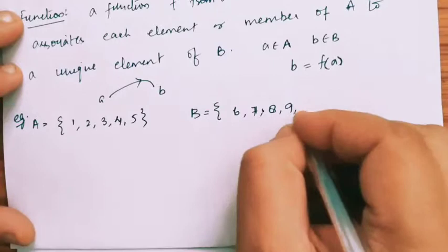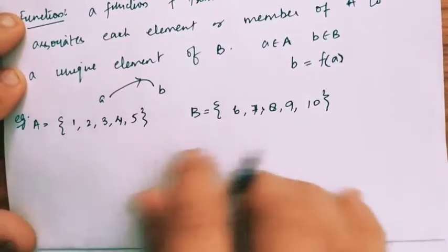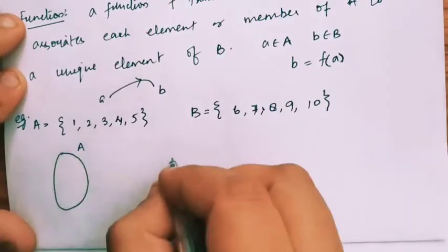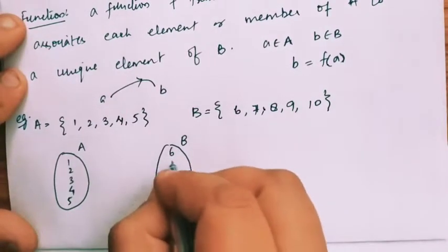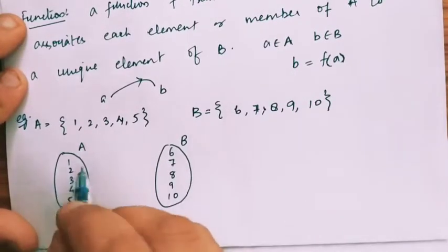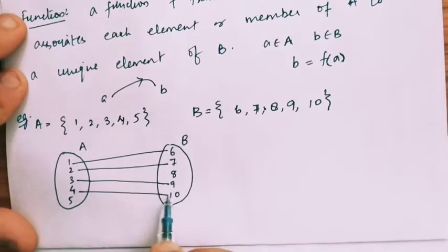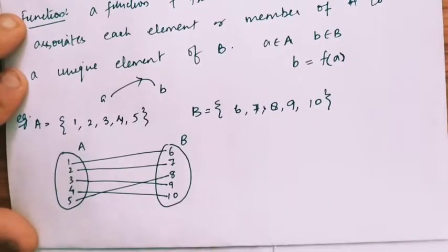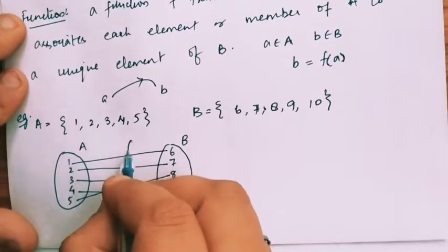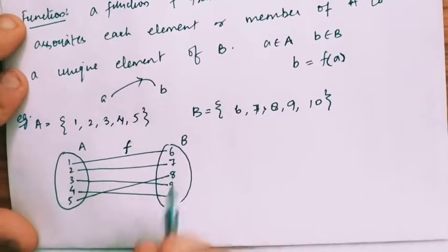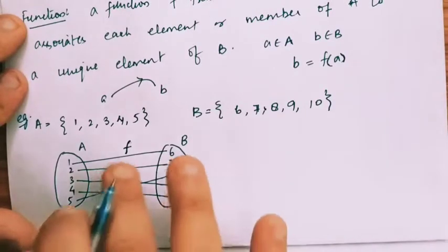And B is the set {6, 7, 8, 9, 10}. In the arrow diagram, A has elements 1, 2, 3, 4, and 5, and B has elements 6, 7, 8, 9, and 10. Now, 1 maps to 6, 2 maps to 7, 3 maps to 9, 4 maps to 10, and 5 maps to 8. Every element of A is associated to a unique element of B, so this is a function.